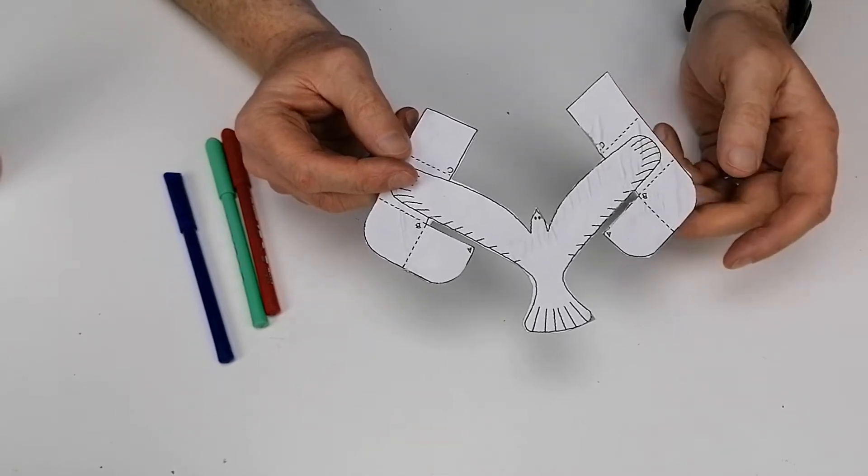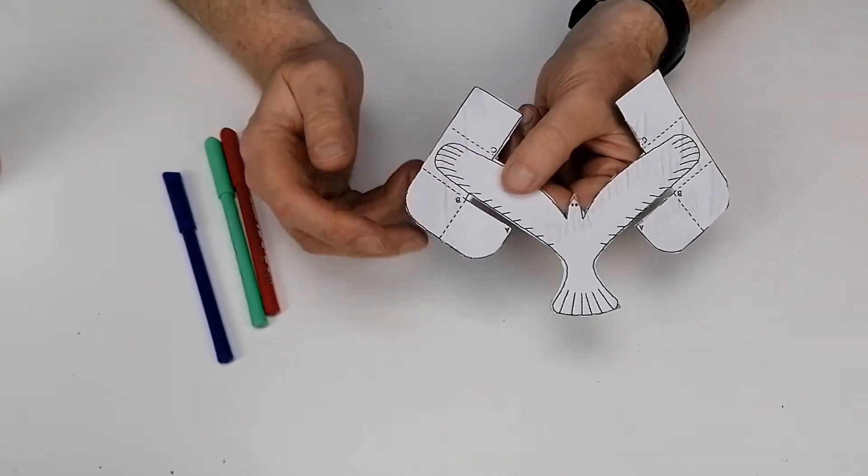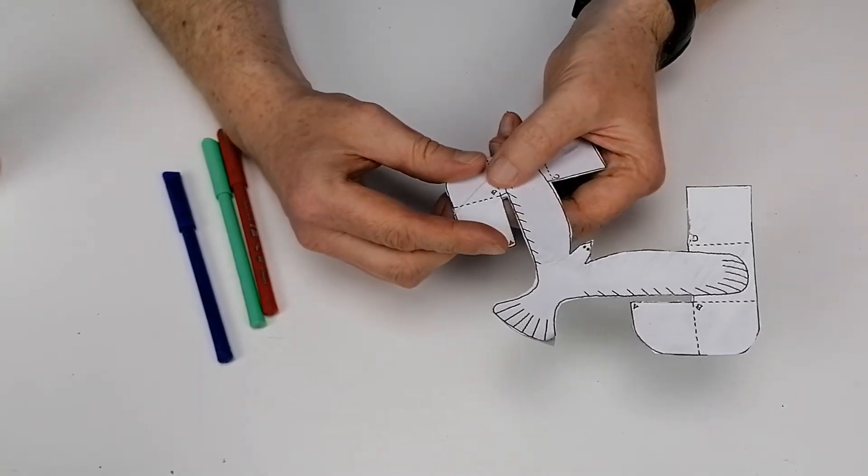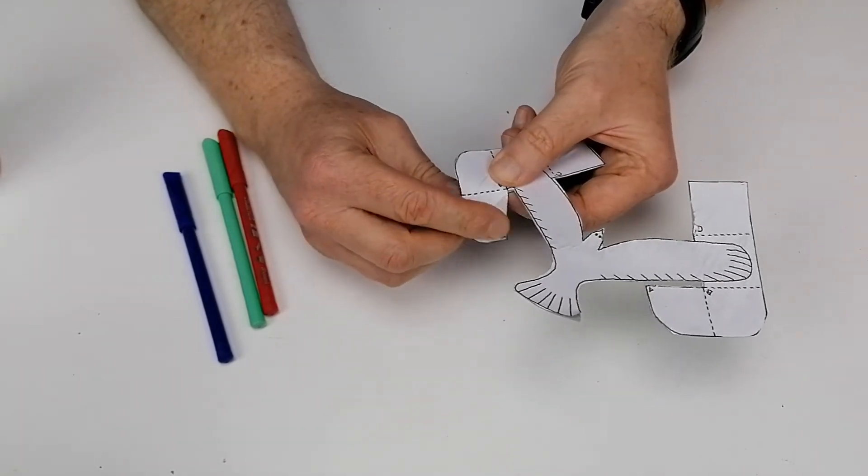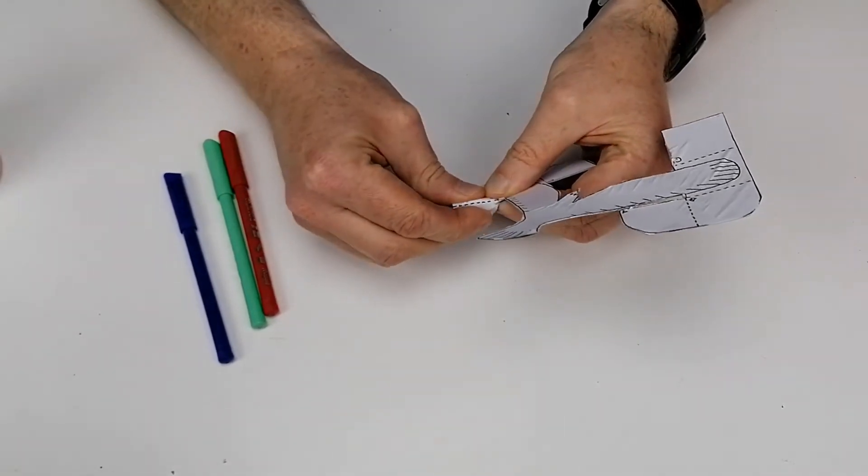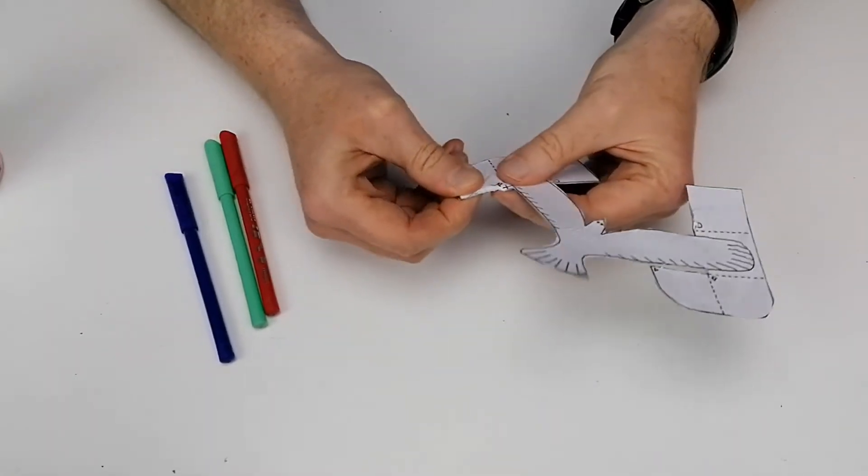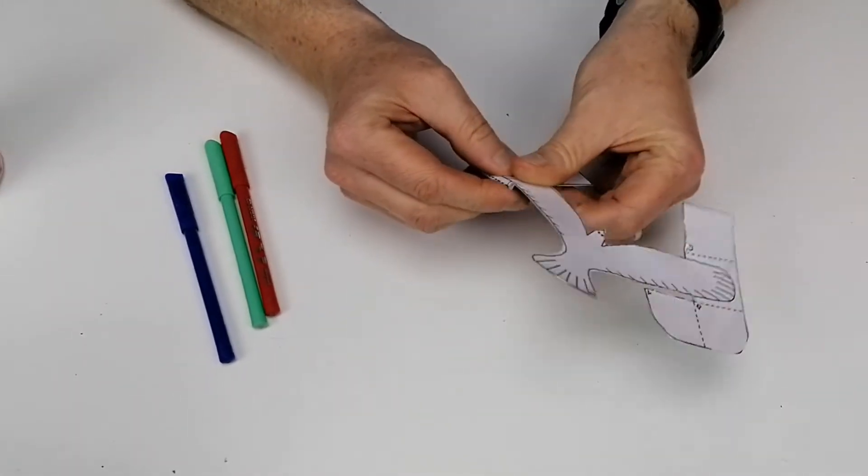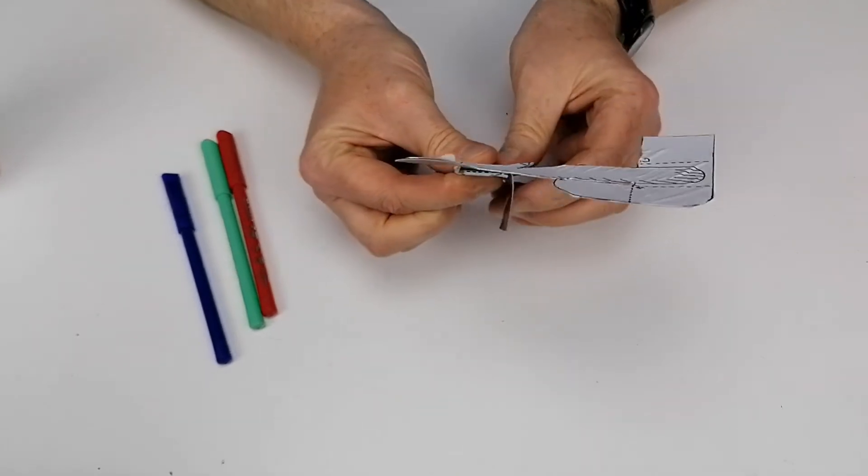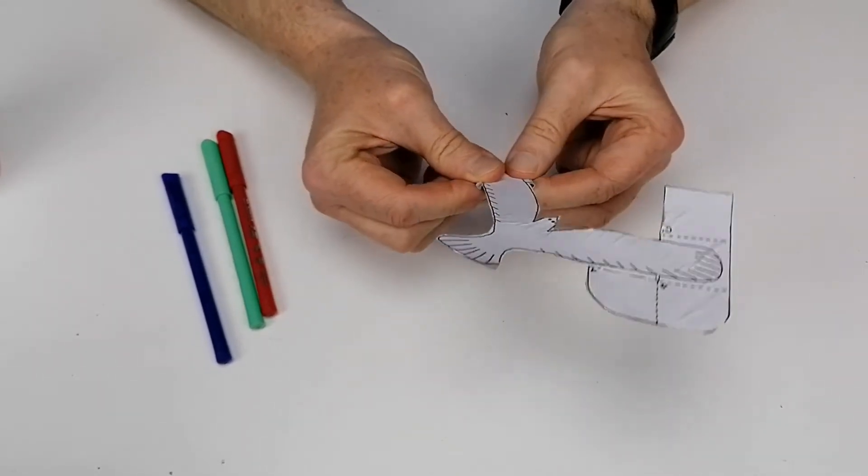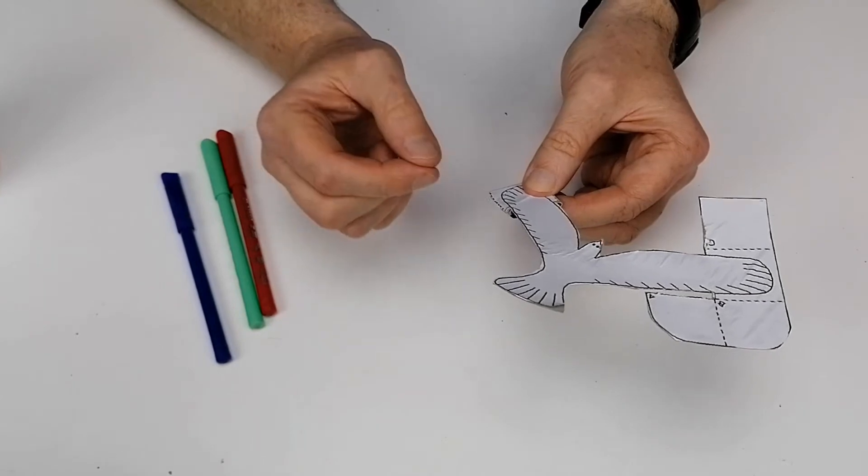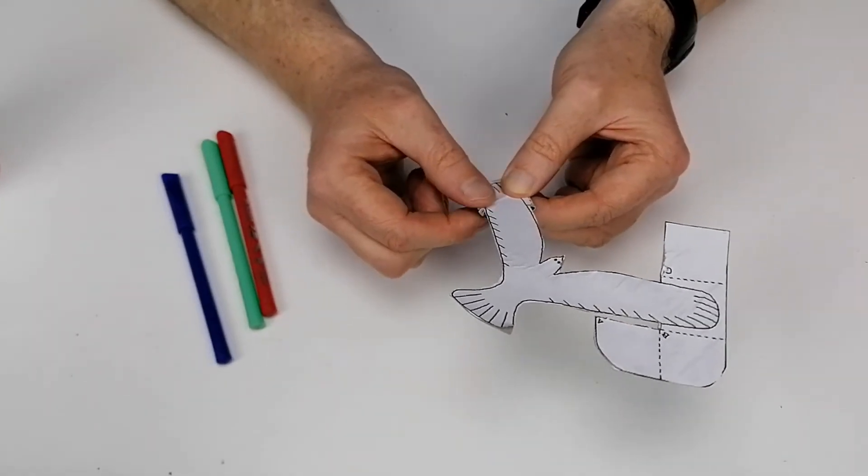So to add the weight here, what we're going to do is just put extra folds. We're going to fold these pieces of paper down, so A goes behind B, and B then folds under the wing, and then C folds on top. And you're going to need a small bit of tape just to tape that together.